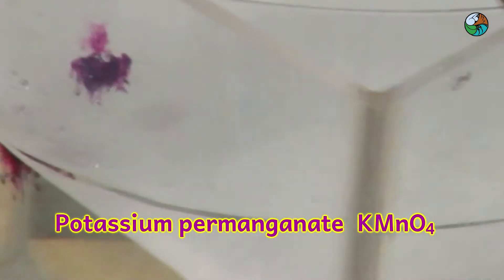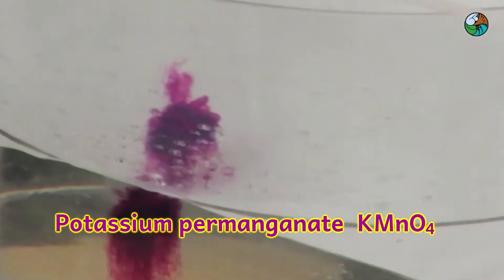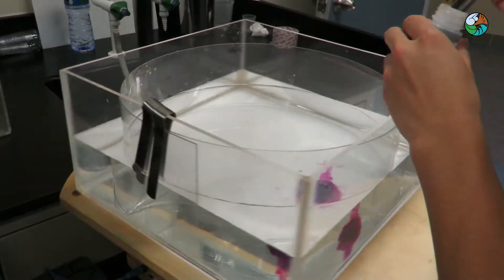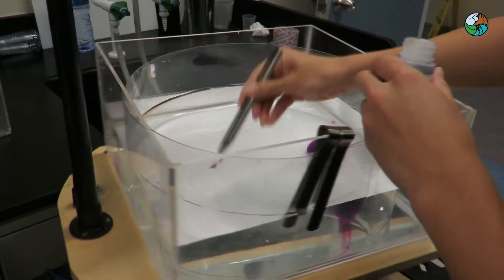Potassium permanganate is soluble in water. The crystals will sink to the bottom of the water tank and slowly dissolve. We can then keep track of the water flow at the bottom layer.